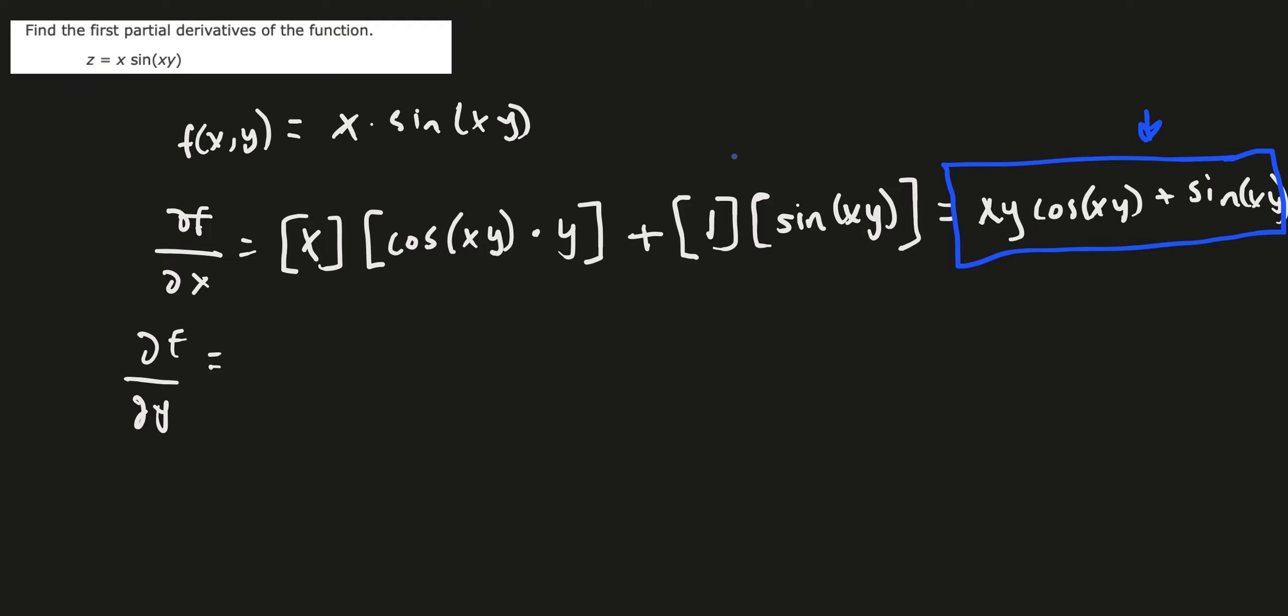Again, how did I get this? I basically set y to be a constant. And then if I set y to be a constant, it's like sine of 7x or something. And then we have x times that, so we have x. So we basically use the product rule with this problem. That's it.